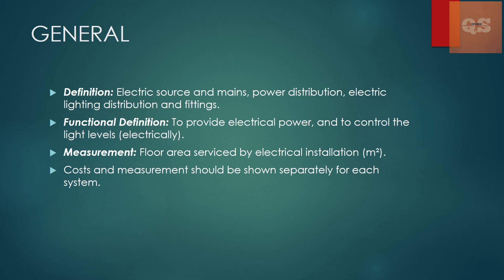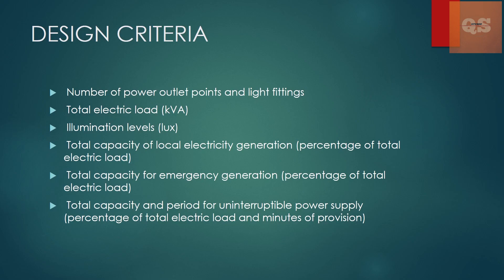Under the electrical section there are different systems which we'll be looking into. These are some design details usually required when making elemental cost plans — outlet points, light fittings, electrical load, illumination levels, electricity generation capacity, emergency generation capacity, and UPS capacity. There are square meter rates and kVA rates based on historical data. Each consultant will have these rates from historical data, which is more useful at this stage. Contractors and subcontractors are mostly involved during the final tender BOQ stage.